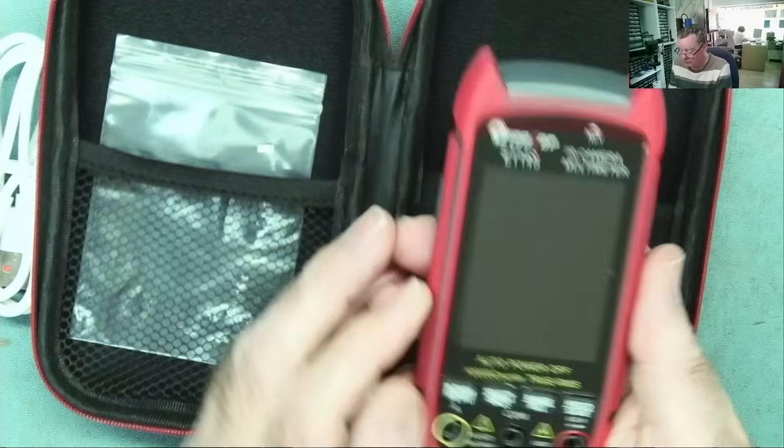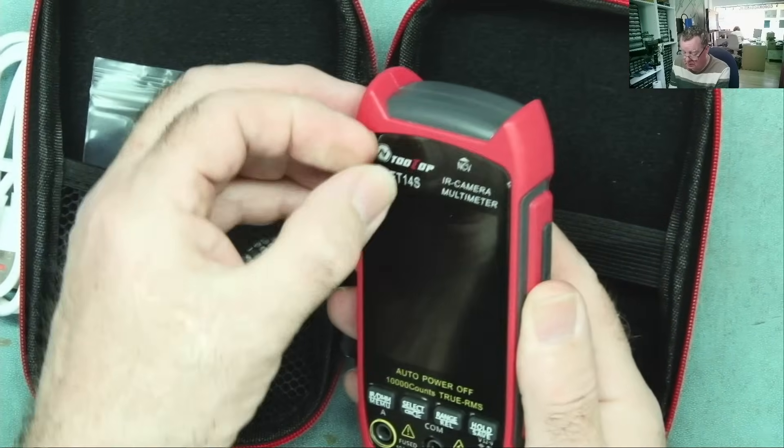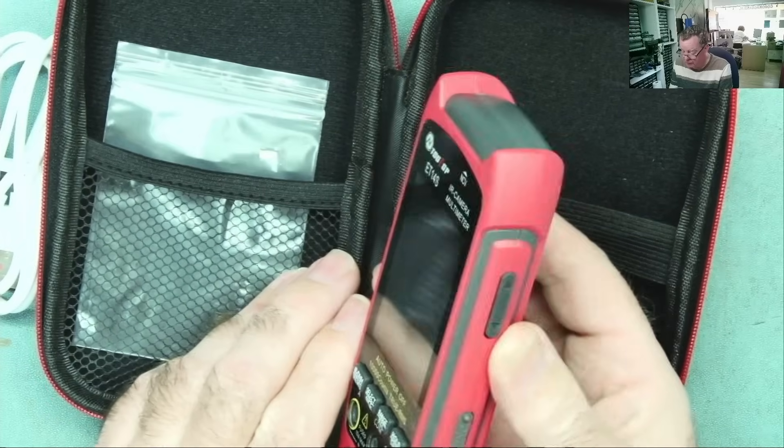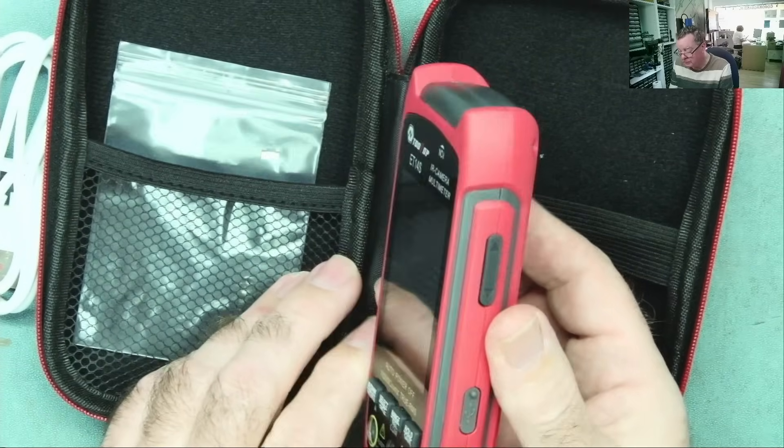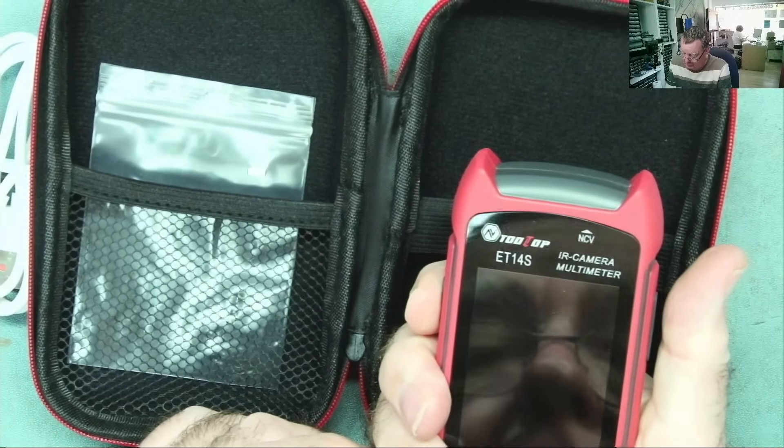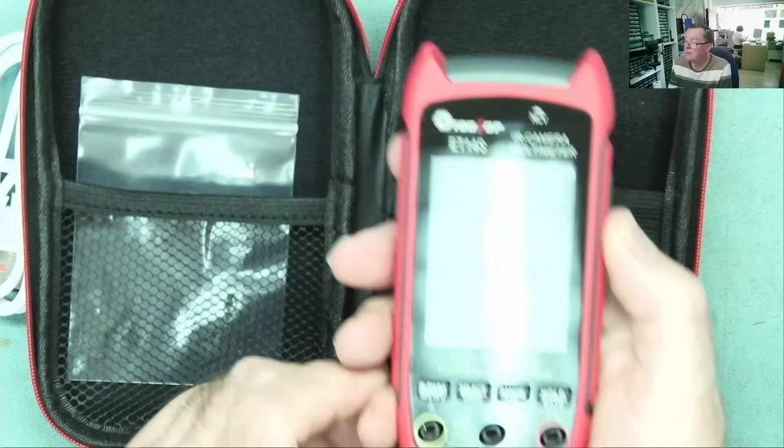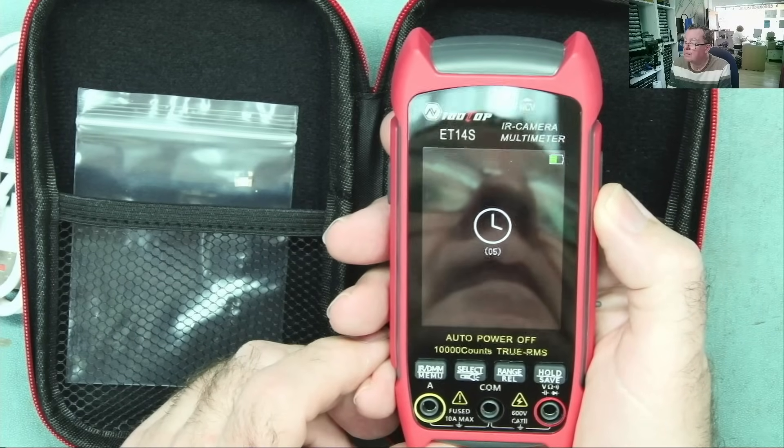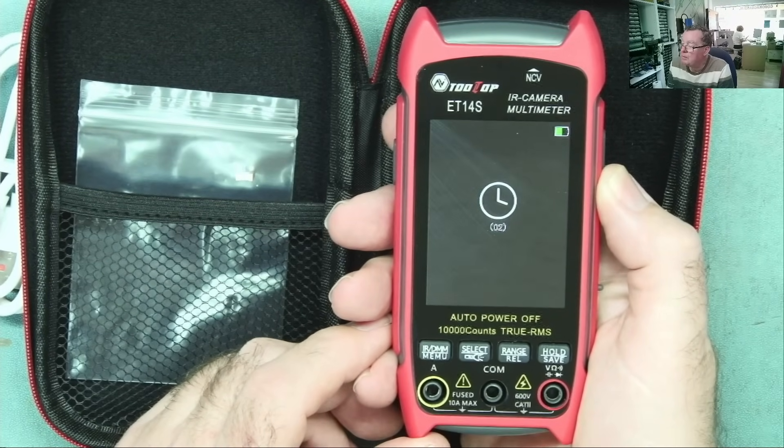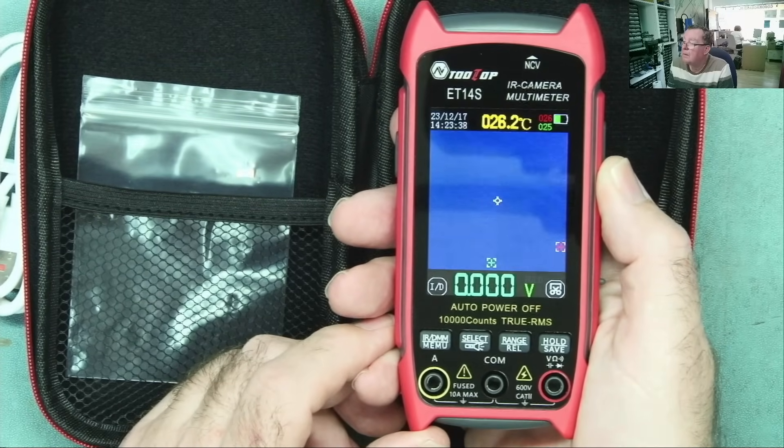Let's look at the multimeter itself. So there's a little screen protector on here. Does this come with batteries already charged? Power button. Yes. And it looks like it's going directly into thermal camera mode.